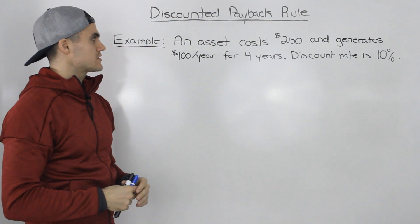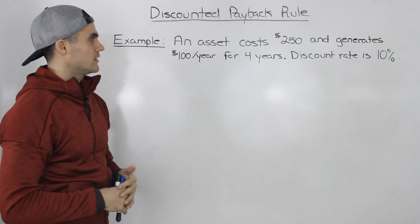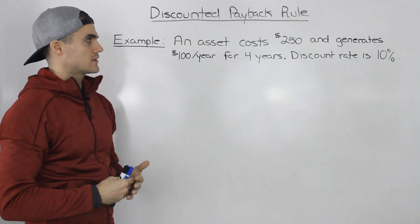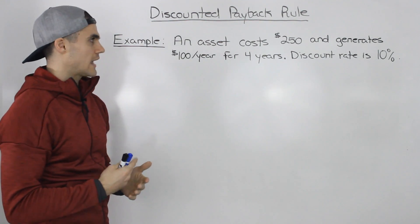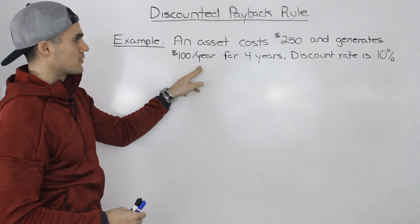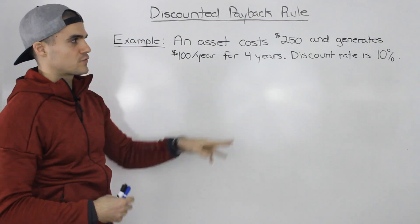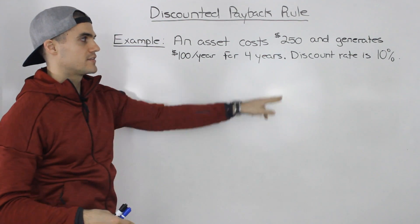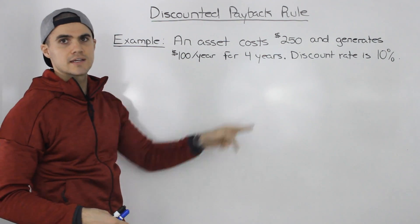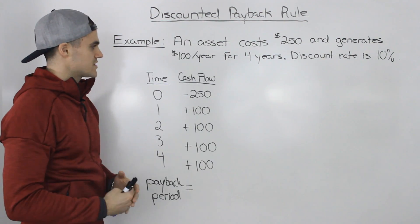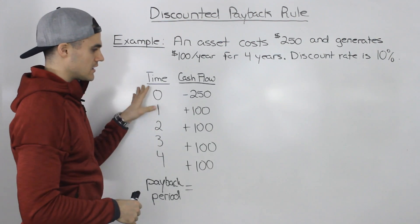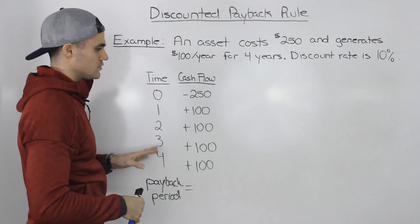Showing this through an example: let's say an asset costs us $250, and then it's going to generate $100 per year for the next four years. The discount rate is 10%.